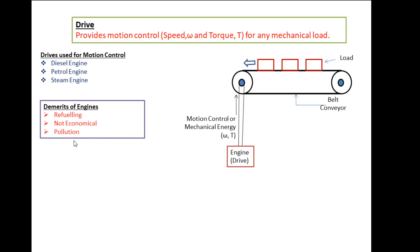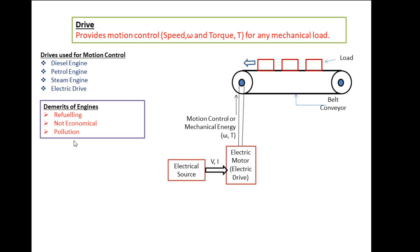These mechanical drives are replaced by electric drives. The function of the electric drive is the same — in the previous case, the mechanical drive provided mechanical energy for the belt conveyor to move the load. Now the same function is performed by an electric motor. This electric motor provides mechanical energy in terms of speed and torque. Electrical energy is given as input to the electric motor.